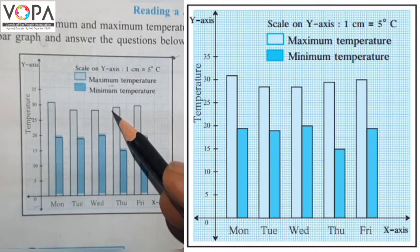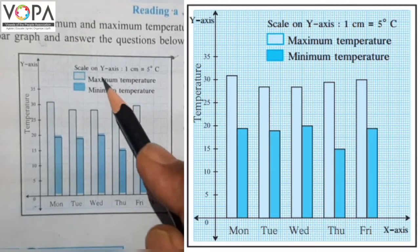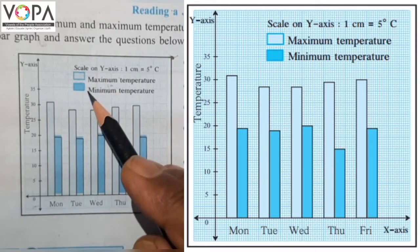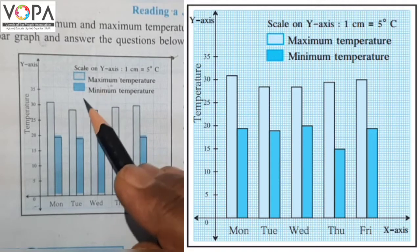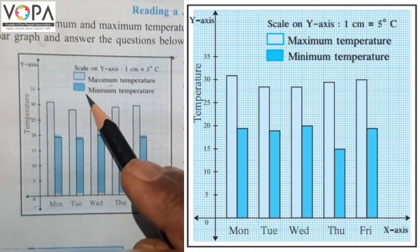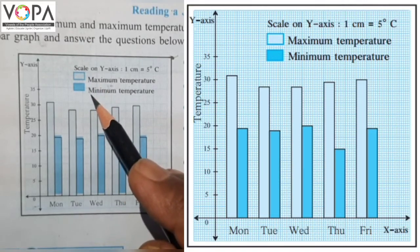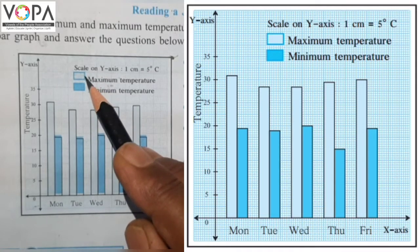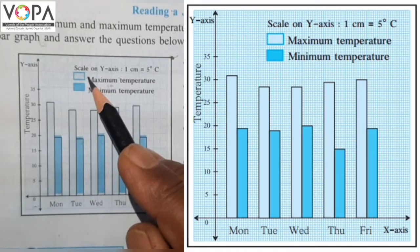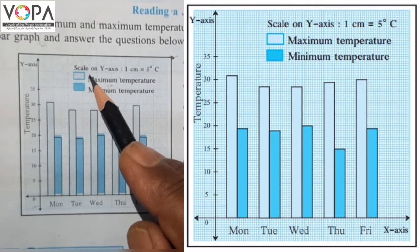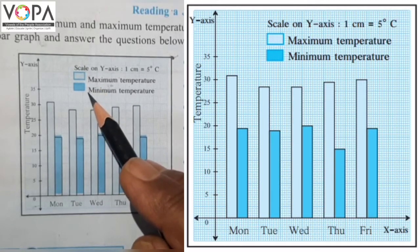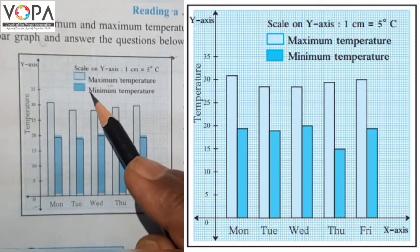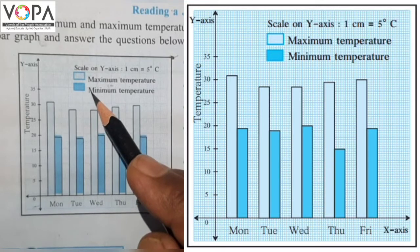There are two boxes at the right corner — that is the index. The light blue color box indicates maximum temperature and the dark blue color box indicates minimum temperature.